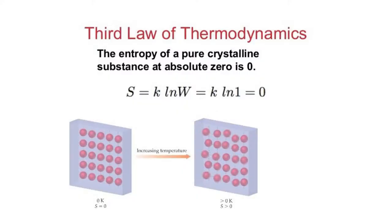Coming to the third law of thermodynamics, it states that the entropy of a pure crystalline substance at absolute zero is zero. So at absolute zero, the entropy of any system comes to zero. It can be correlated by the formula S equals k ln W, where W refers to the probability or the means of arrangement of the crystals. When the crystal is arranged in an orderly fashion, W becomes 1, therefore k ln 1 equals 0. This is the basis of the third law of thermodynamics.